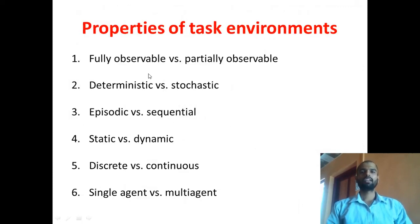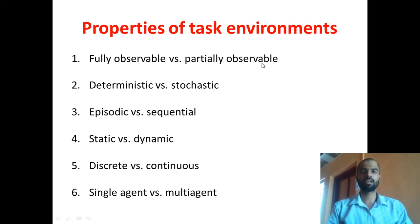Next are the properties of task environments. We already saw what is meant by a task environment. There are six properties of task environments: first, fully observable versus partially observable; next, deterministic versus stochastic; episodic versus sequential; static versus dynamic; discrete versus continuous; and single agent versus multi-agent.